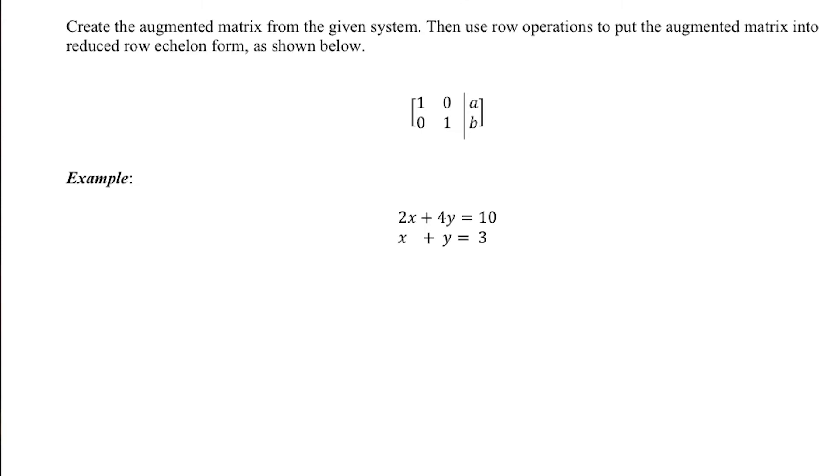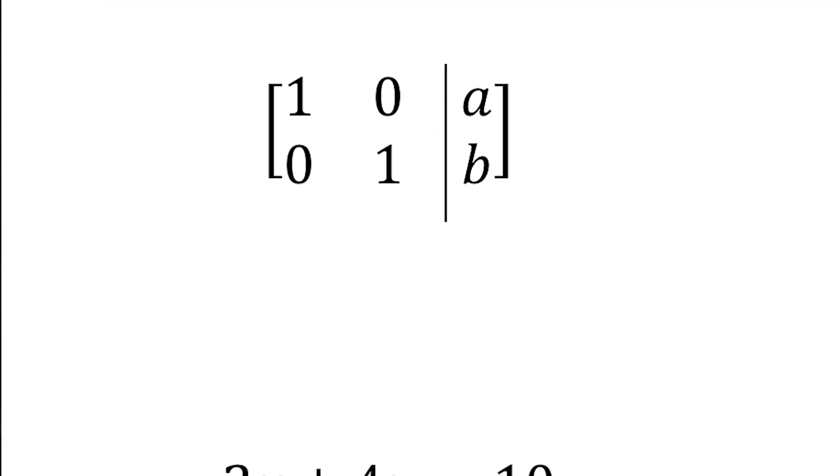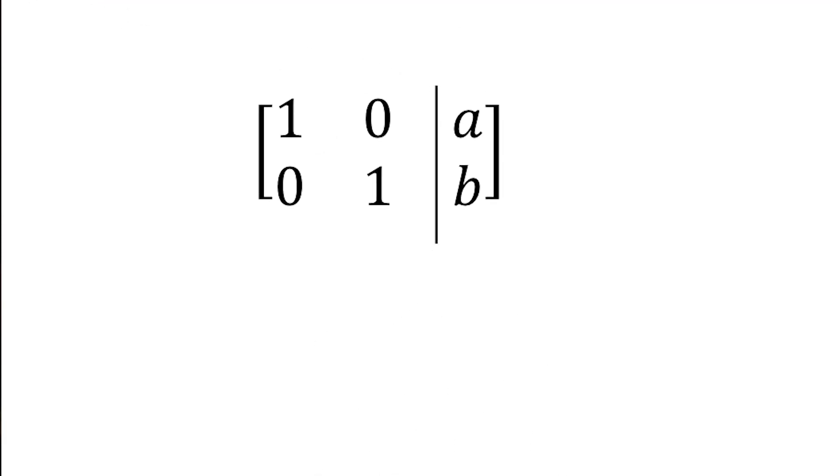Reduced row echelon form looks like this. So it's where we turn the left-hand side into the identity matrix. An identity matrix has ones along the diagonal and zeros everywhere else. If you can turn the left-hand side into the identity matrix, your solution to the system will show up on the right.